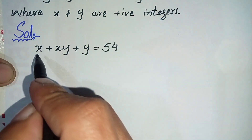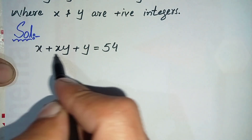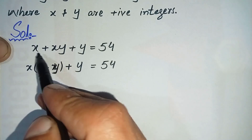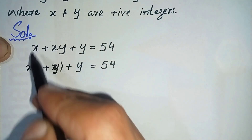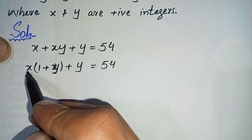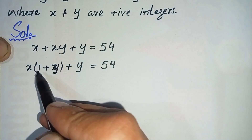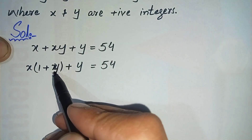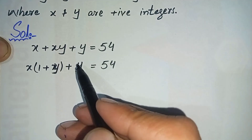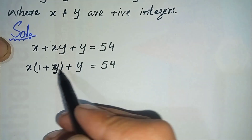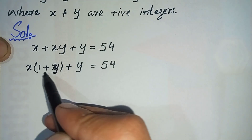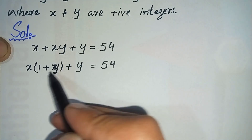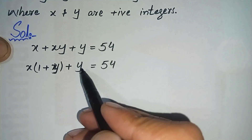In the first step, I will take x common from the first two terms. When we take x common from those two terms, it becomes x(1 + y) + y. In the next step, I will try to make (1 + y) a common factor.